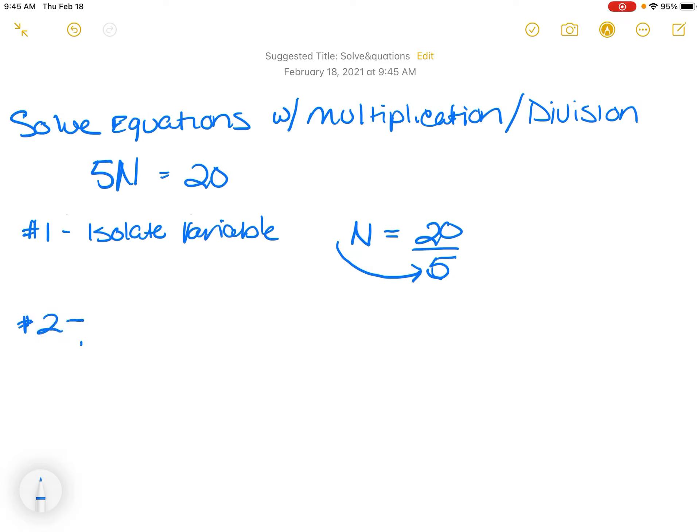The second step is to identify the solution or solve for the unknown. So I'm going to identify. So we know that 20 divided by 5 is equal to 4. So n is equal to 4.